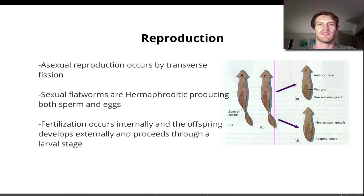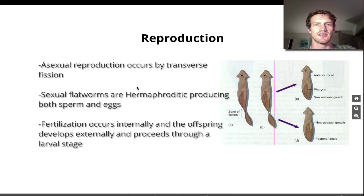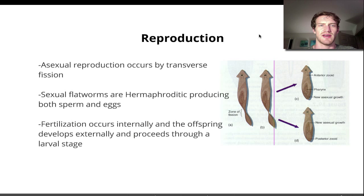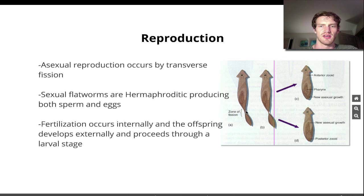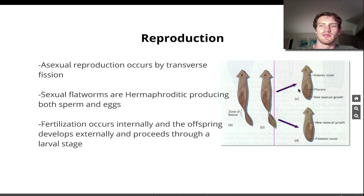Next is how they reproduce. They have asexual reproduction that occurs by transverse fission. Fission means when something splits apart. So if we look at this flatworm, it's going to split apart in this zone of fission — that's the area where it splits — and that can form two new individuals.